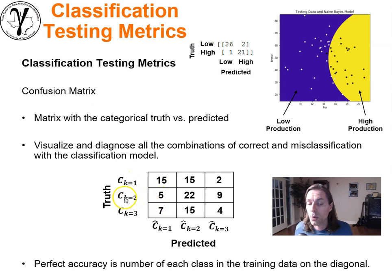In this cell we're seeing that we predicted category one and the truth was category one. We predicted category one and the truth was category two, and so forth. We can visualize and diagnose all of the combinations of correct and incorrect misclassifications within our classification model. Perfect accuracy would simply be a matrix for which we have on the diagonals the total number of samples that belong to each category, and these off-diagonals would all be zeros—no misclassifications.